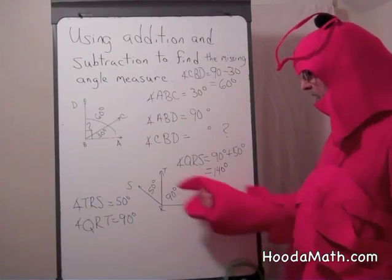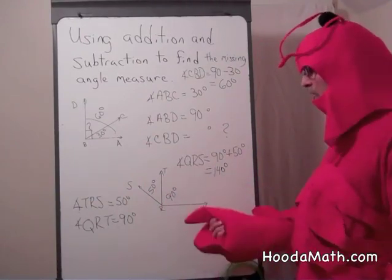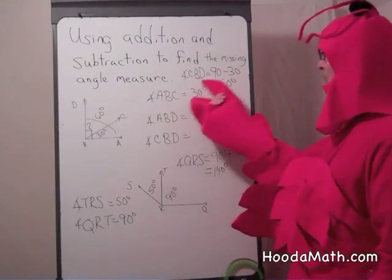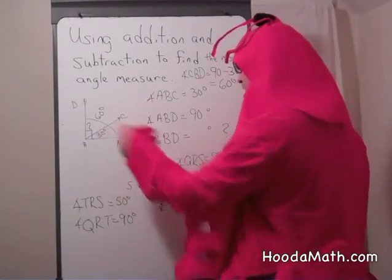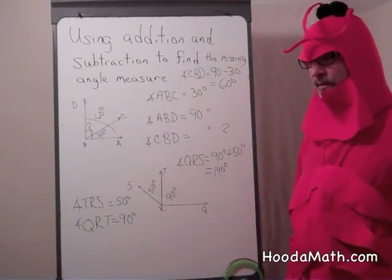So when angles are adjacent to each other, if you have a missing angle, you use either addition or subtraction to find the missing angle. Good job, little math lobsters.